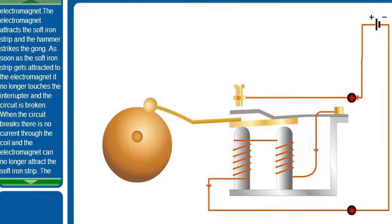As soon as the soft iron strip gets attracted to the electromagnet, it no longer touches the interrupter and the circuit is broken. When the circuit breaks, there is no current through the coil and the electromagnet can no longer attract the soft iron strip.